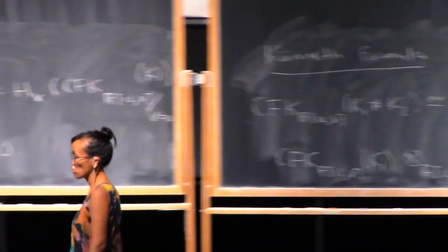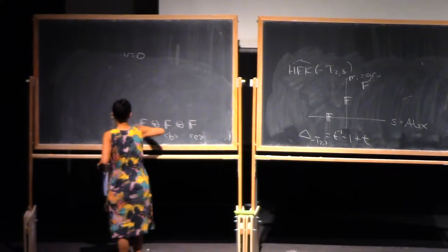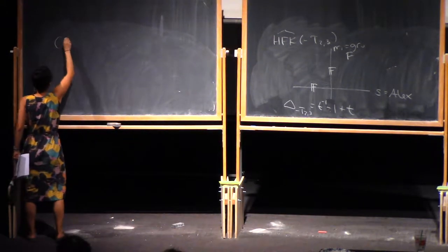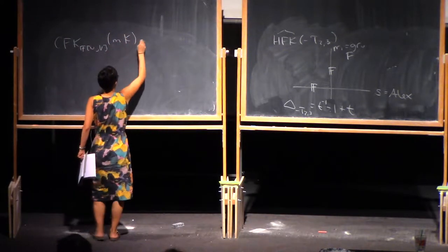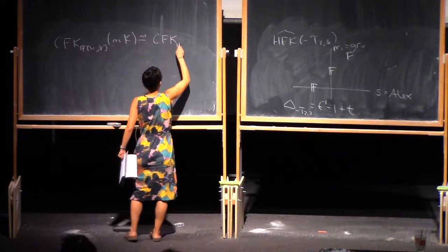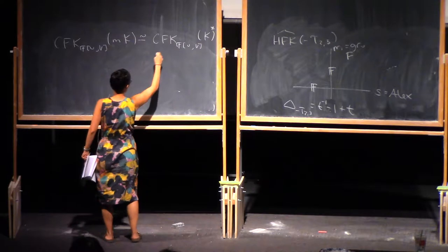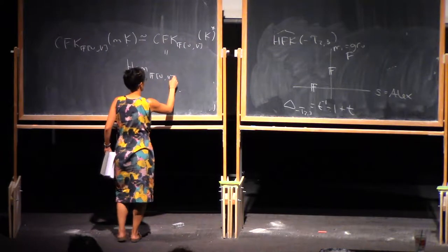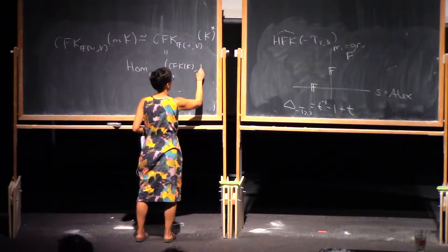The knot flow complex behaves nicely under mirroring, in the sense that the knot flow complex of the mirror of K is homotopy equivalent to the dual of the knot flow complex of K. By dual, I mean F-adjoin-UV homomorphisms from this complex to the ground ring.